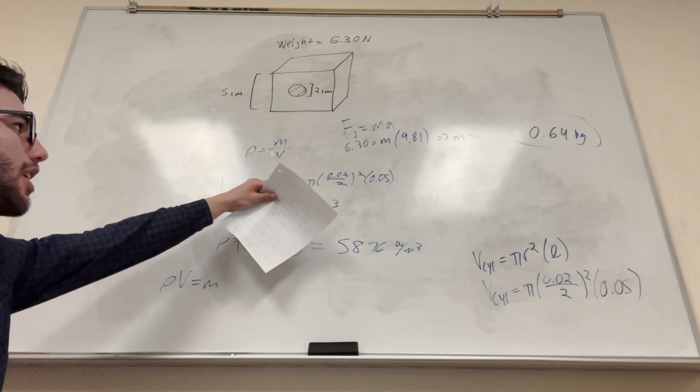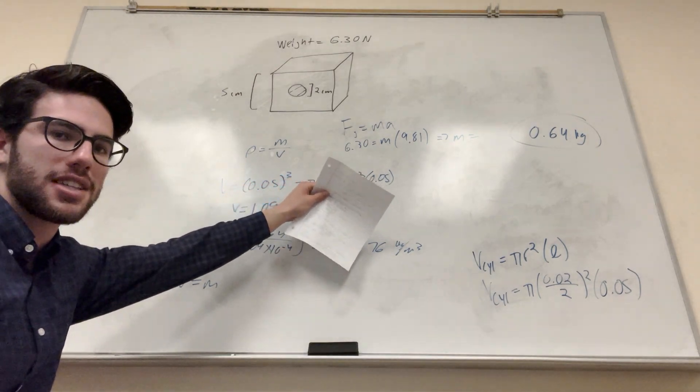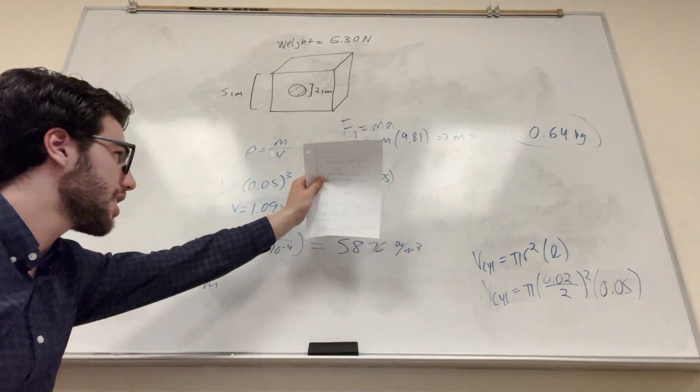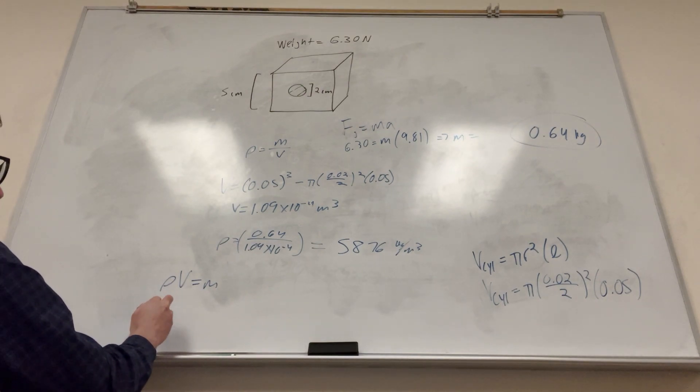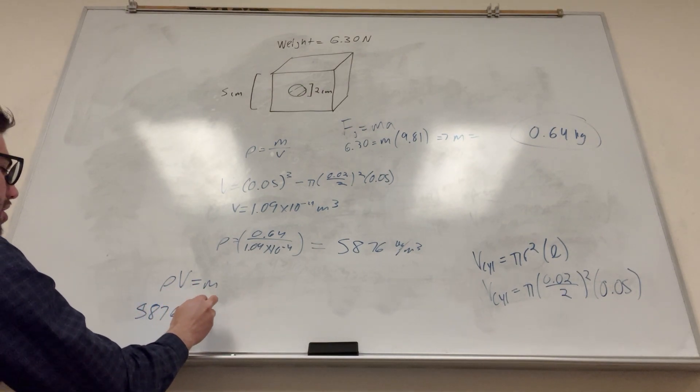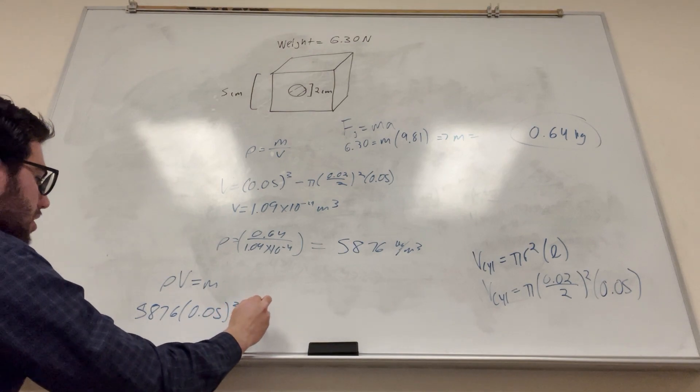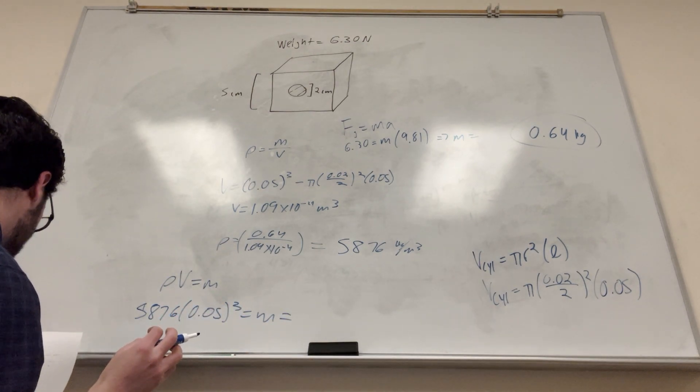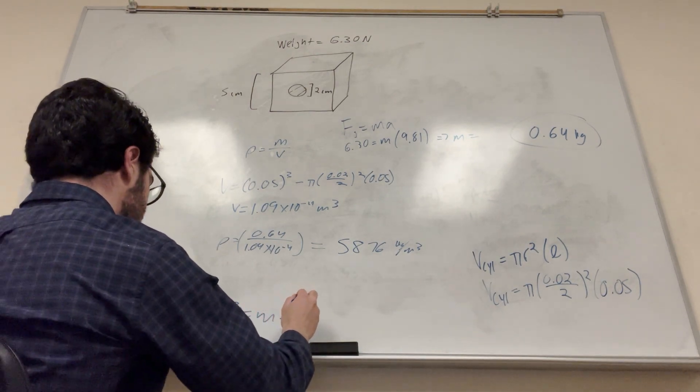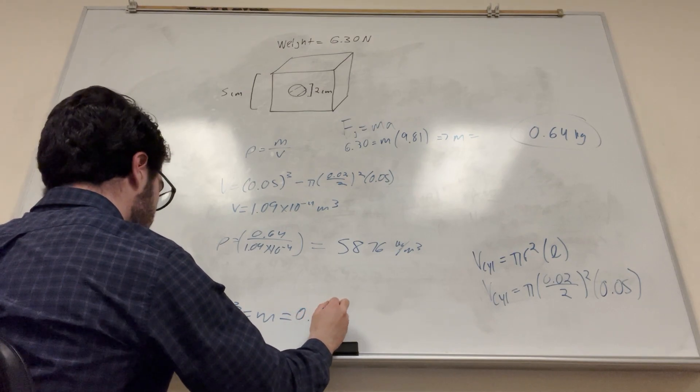It's just going to be this part, right? This is the volume of the cube, and then this is subtracting the cylinder. If you just don't have the cylinder, you just get rid of that. So that's going to be 5876 times 0.05 cubed is equal to the mass. And if you calculate that, here you get 0.73 kilograms.